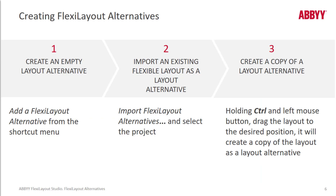The steps to creating a FlexiLayout alternative could vary because there are different methods. The first one is to use the shortcut menu and simply add a FlexiLayout alternative. The second method is interesting: you can import a FlexiLayout — essentially import an entire FlexiLayout as a layout alternative into your existing FlexiLayout Studio project. I use this feature when I want to parse an address using a different layout. If that need comes about, I will import that layout as a layout alternative and then drag it into my main layout.